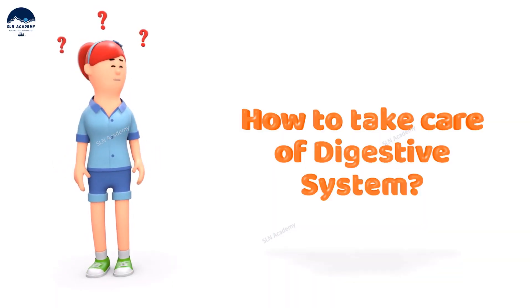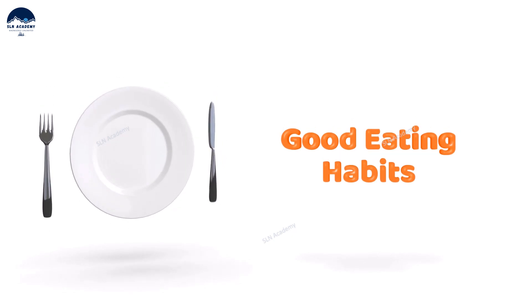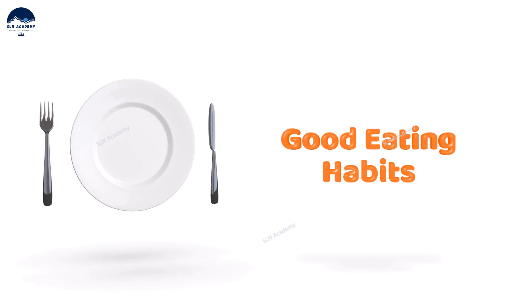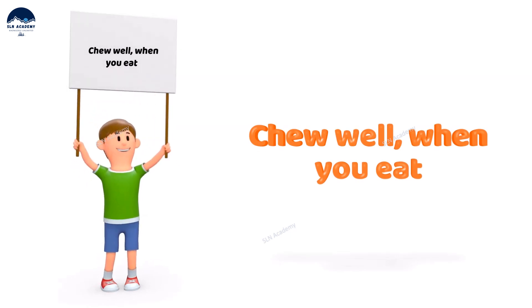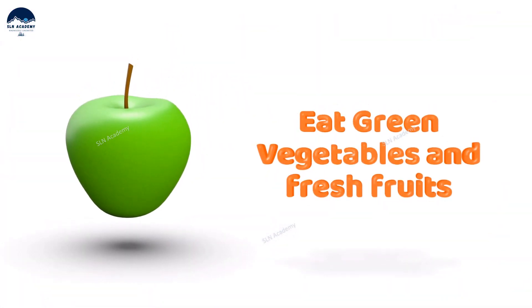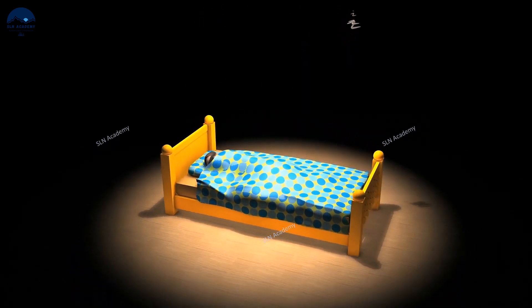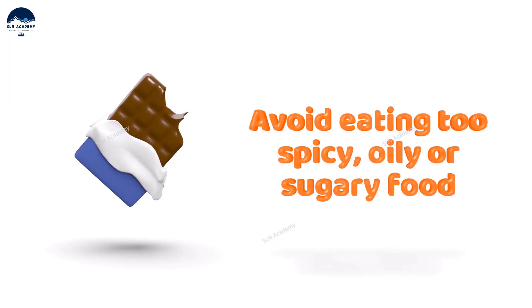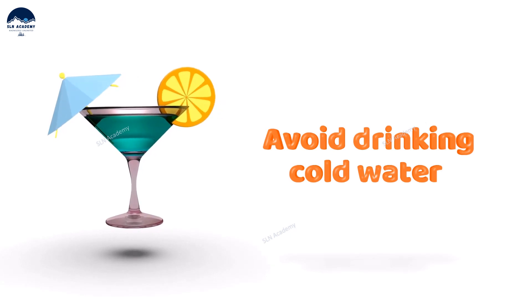How to take care of the digestive system? Bad digestion is a root cause of a number of health problems and illnesses. So it is important to eat healthy food and maintain good eating habits to stay healthy. To take care of the digestive system: chew well when you eat; eat a lot of green vegetables, fruits and salads; do not sleep immediately after eating; avoid eating too spicy, sour, oily and sugary food; avoid eating refrigerated or stale food items; avoid drinking cold water — lukewarm water is the best for digestion.